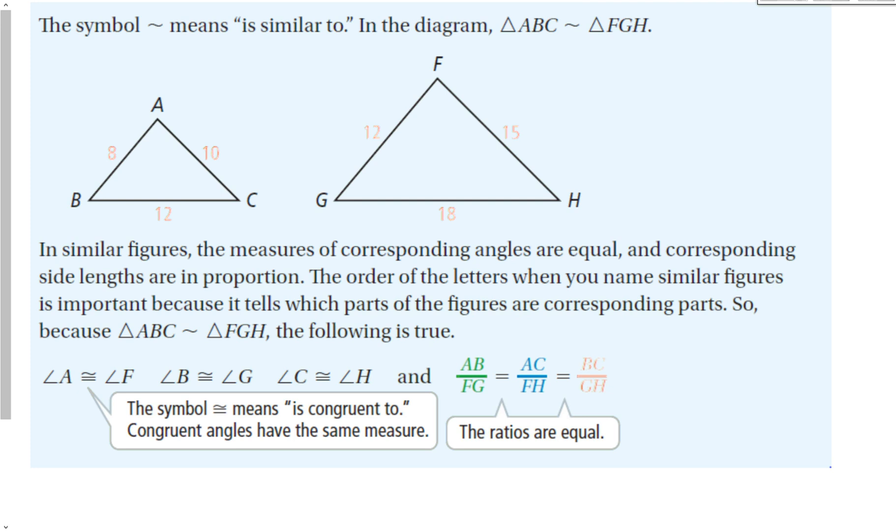In similar figures, the measures of corresponding angles are equal, and corresponding side lengths are in proportion. Angles are equal, side lengths are not necessarily equal because obviously A is not equal to 12, but they are in proportion. The order of the letters when you name similar figures is important because it tells you which parts of the figures are corresponding parts. So because triangle ABC is similar to triangle FGH, the following is true.